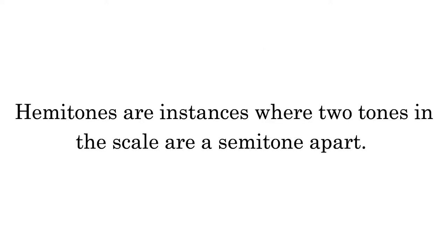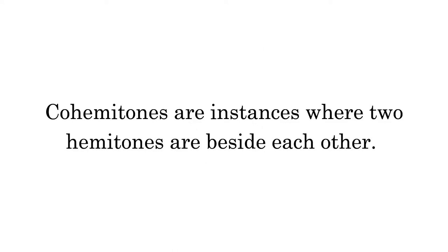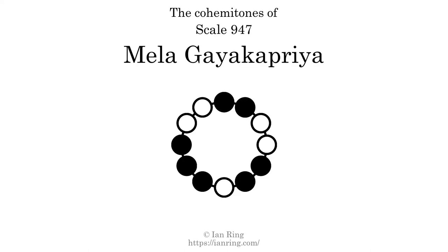Hammitones are instances where two tones in the scale are a semitone apart. This scale has four hammitones, at positions here, here, here, and here. Co-hammitones are instances where two hammitones are beside each other. This scale has one co-hammitone, here.